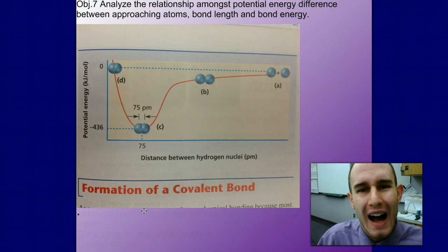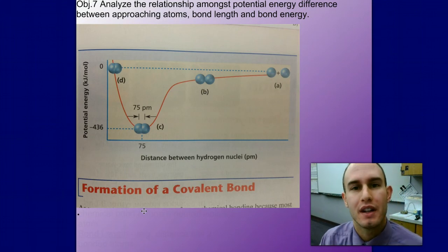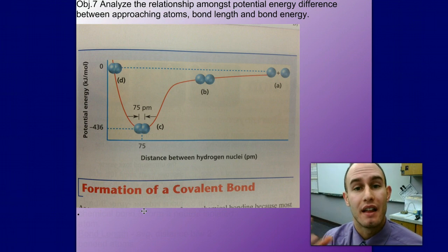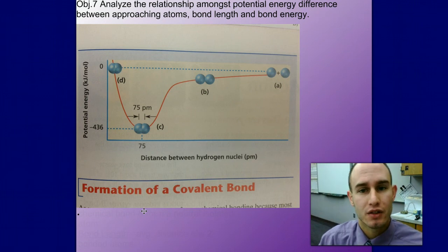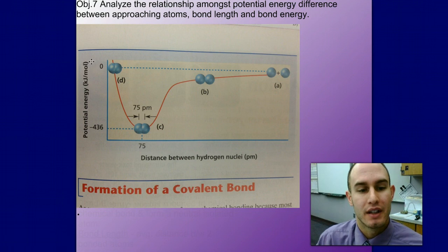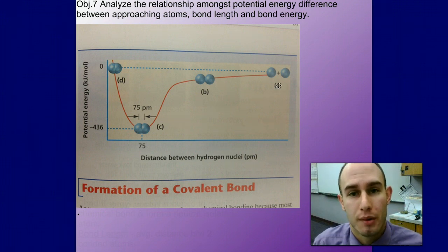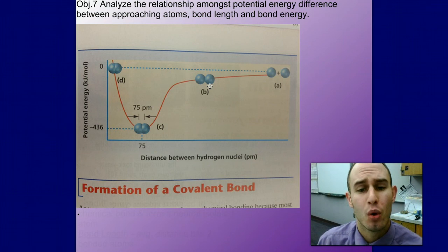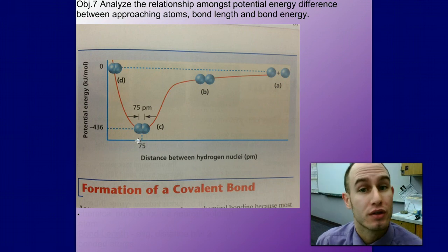Next I want to talk about why these bonds form. Bonds form between atoms for stability reasons. In this example here, we are looking at potential energy versus the distance between the hydrogen nuclei. Here we have two hydrogen atoms that are separated, there is really no attraction or repulsion. At this point the attractive forces are bringing the atoms together and there is actually a drop in potential energy. At this point the potential energy is at its lowest, so it is most stable here where the attractive forces overcome the repulsive forces.